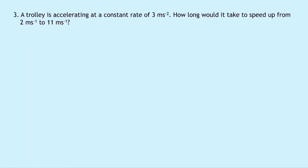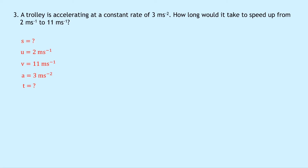Question three says that a trolley is accelerating at a constant rate of three meters per second squared. How long would it take to speed up from two meters per second to 11 meters per second? So we're asked how long, so we're looking for time. S equals question mark — again we don't know displacement. We know that the initial speed is two meters per second, V equals 11 meters per second, the acceleration is three meters per second squared, and the time is what we're trying to find. I'm going to put a star next to that one.